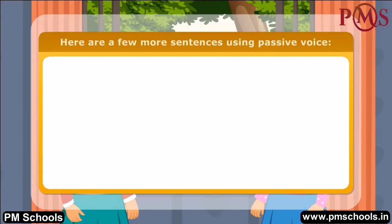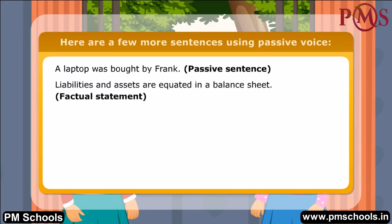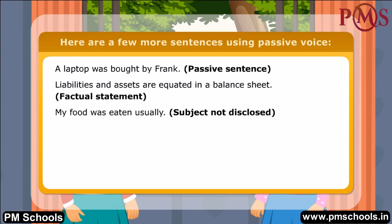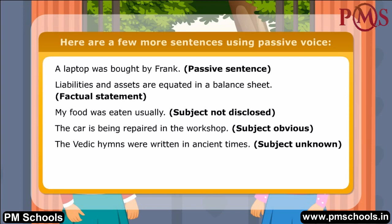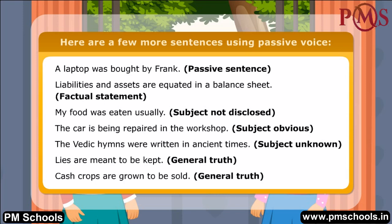Here are a few more sentences using passive voice: A laptop was bought by Frank — passive sentence. Liabilities and assets are equated in a balance sheet — factual statement. My food was eaten usually — subject not disclosed. The car is being repaired in the workshop — subject obvious. The Vedic hymns were written in ancient times — subject unknown. Lies are meant to be kept — general truth. Cash crops are grown to be sold — general truth.